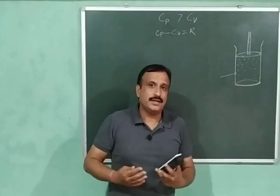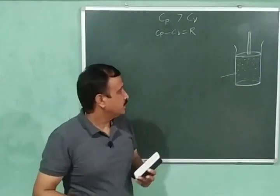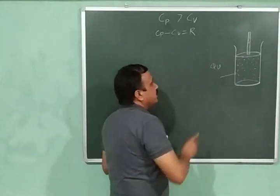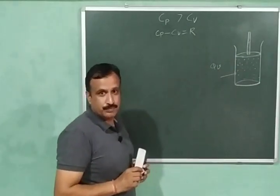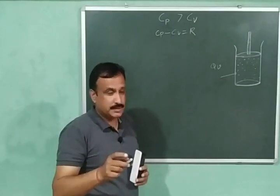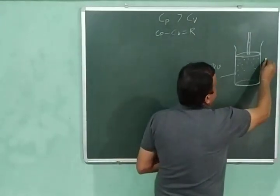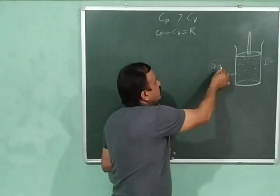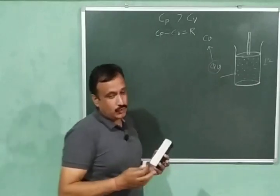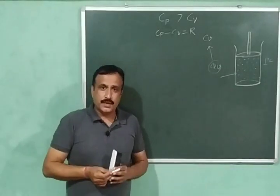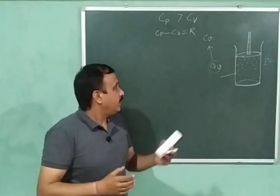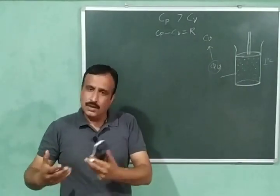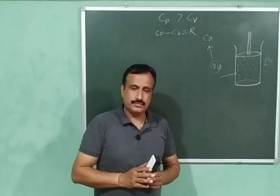So let us explain why CP is greater than CV. Suppose I am supplying QV amount of heat to this system at constant volume — I have kept the volume constant — and the temperature of the system increases through one degree Celsius. Then this QV is CV, that is heat capacity at constant volume. In this case no work will be done, and the entire amount of heat will be used to increase the temperature or to increase the internal energy of the gas.